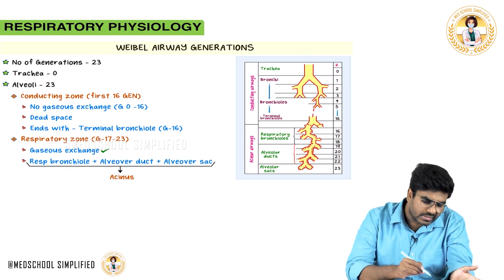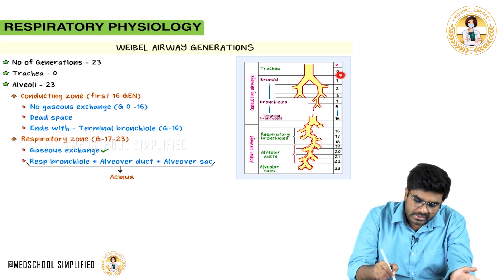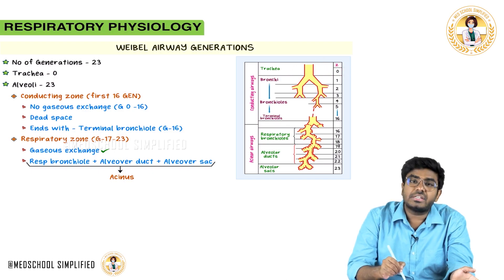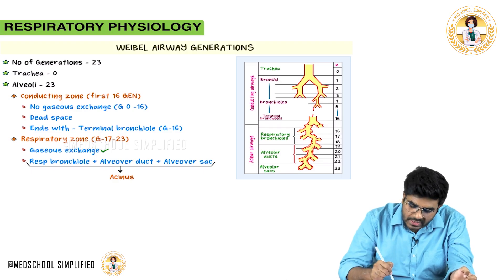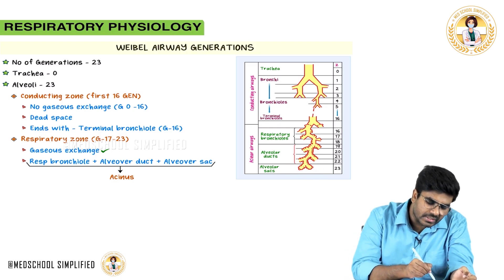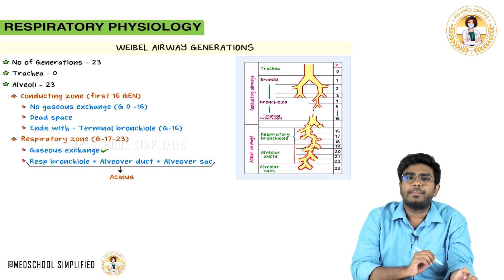Generation zero is the trachea, and the last generation — generation 23 — is the alveolar sacs.